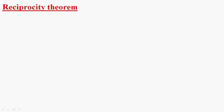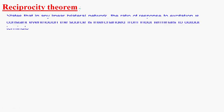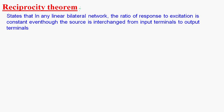Hi guys, today we are going to learn about Reciprocity Theorem. Reciprocity Theorem states that in any linear bilateral network, the ratio of response to excitation is constant, even though the source is interchanged from input terminals to output terminals. Even though we change the source from input side to output side, the ratio of response to excitation is constant. That is Reciprocity Theorem.